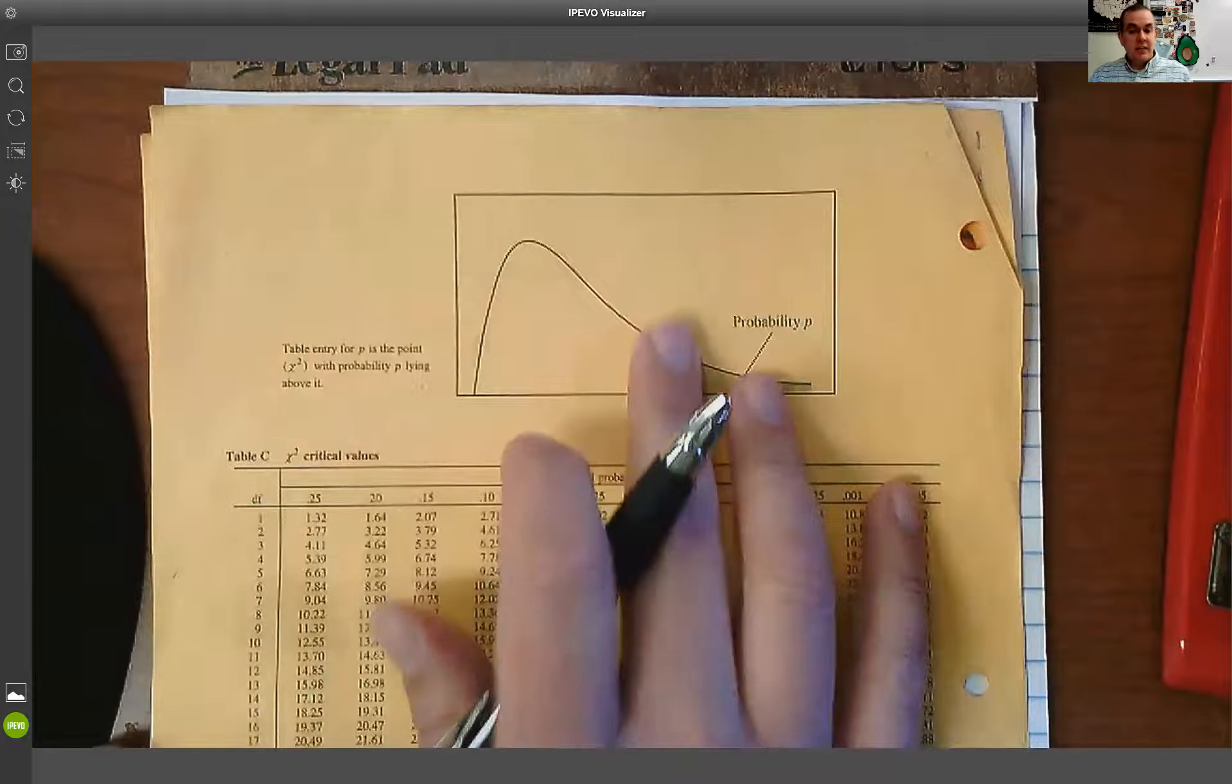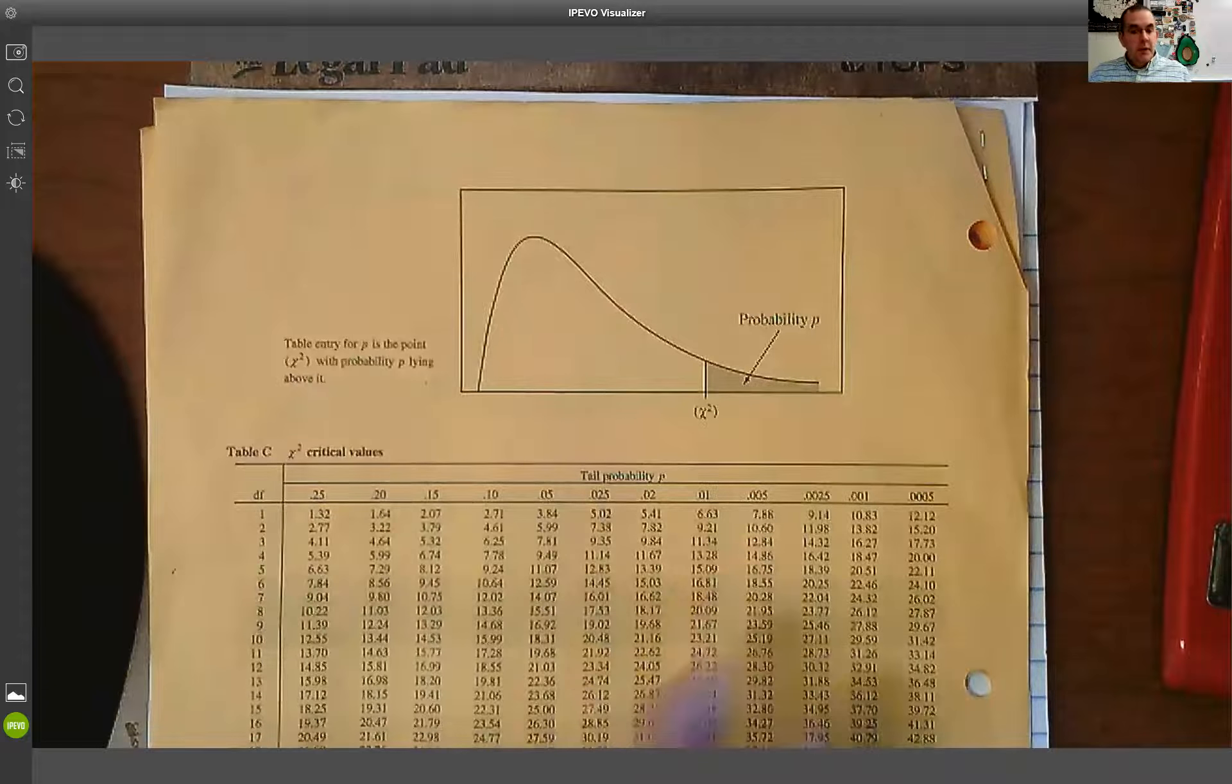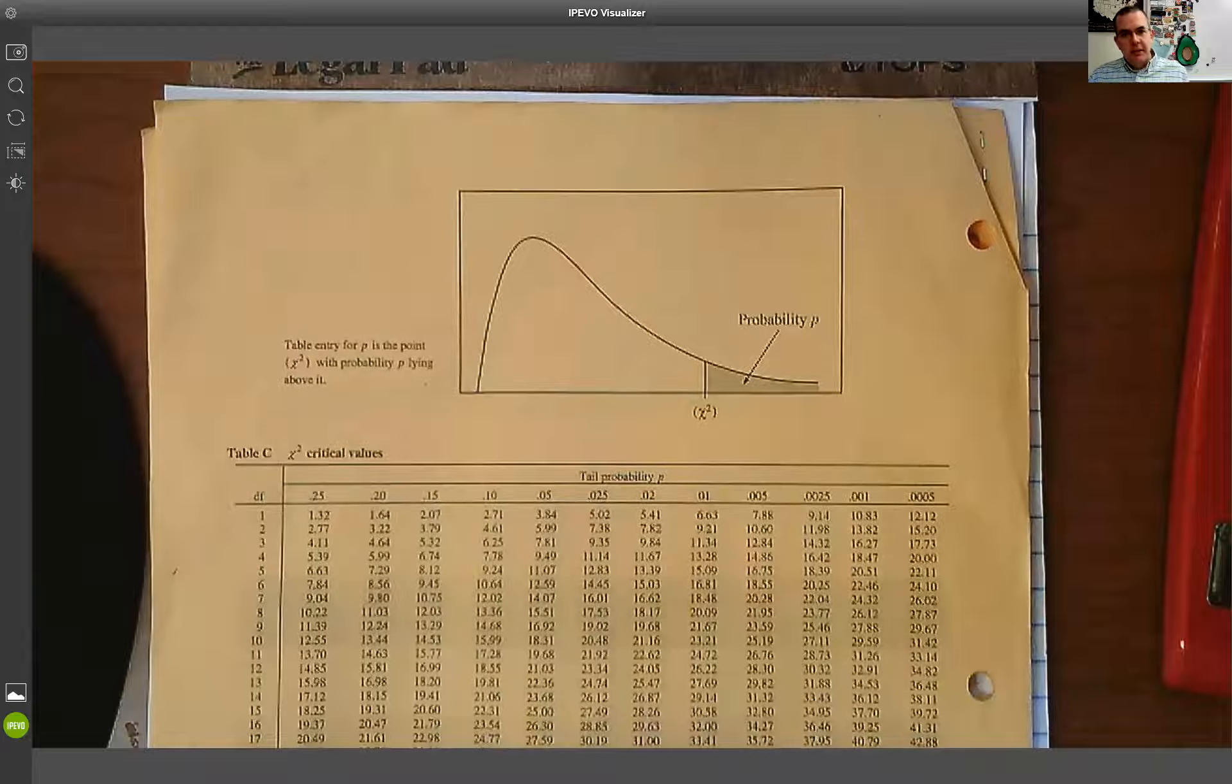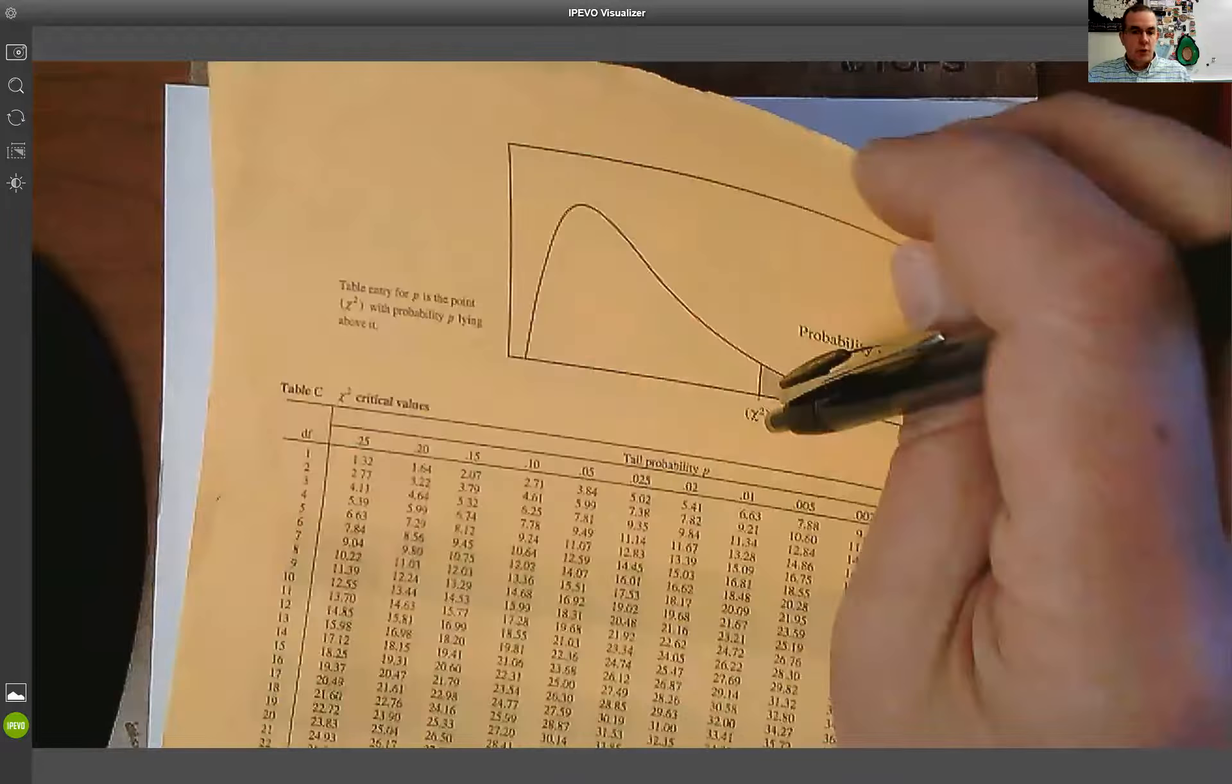So we're going to use this table. It's our last table in the formula sheet that we're going to work on, but we're still going to do phantoms. There's not going to be an interval on this one. It's going to be just tests. So we're going to do phantoms for all three tests.